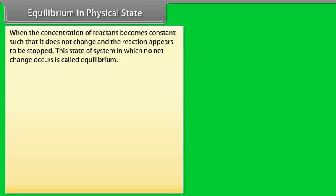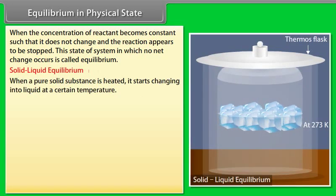Equilibrium in Physical State: When the concentration of a reactant becomes constant such that it does not change and the reaction appears to have stopped, the state of the system in which no net change occurs is called equilibrium.